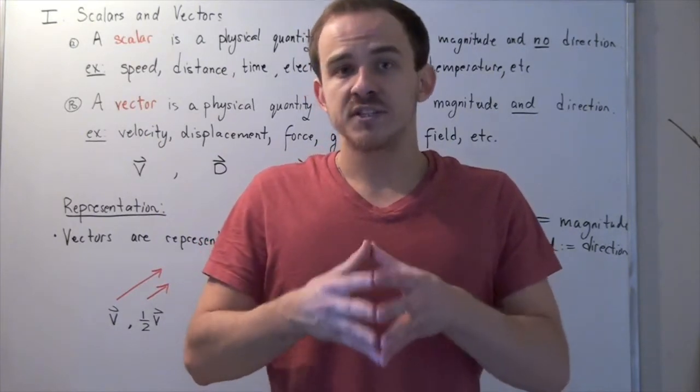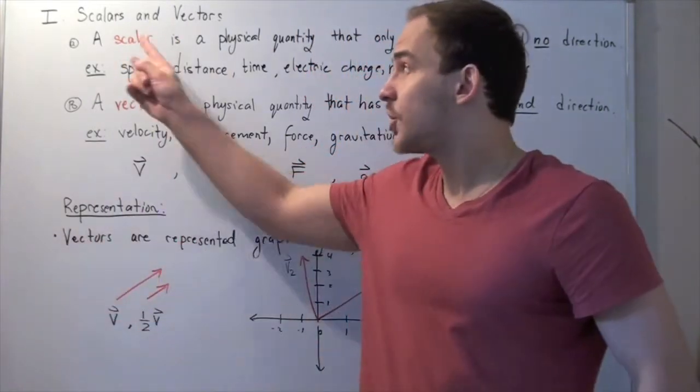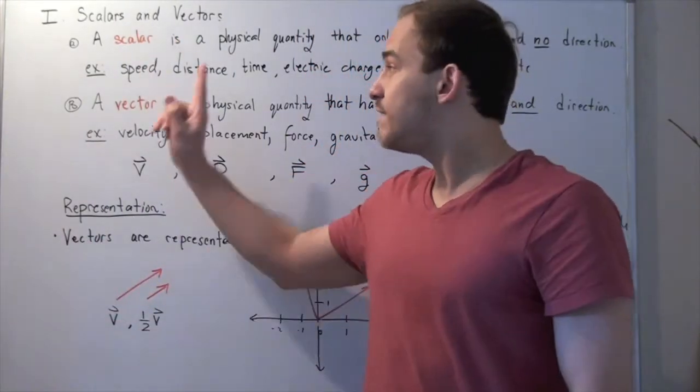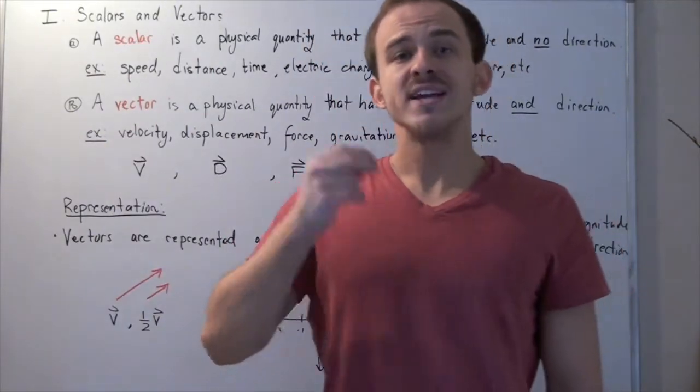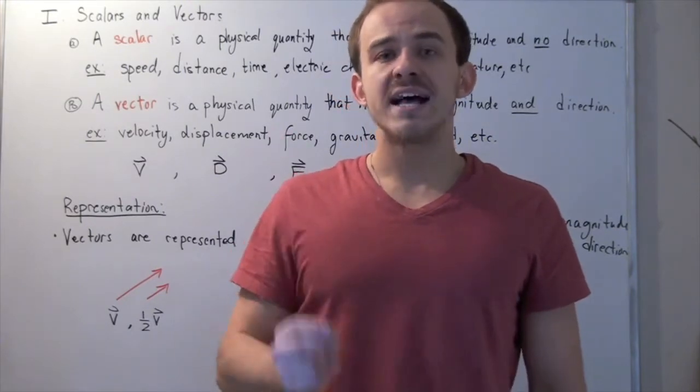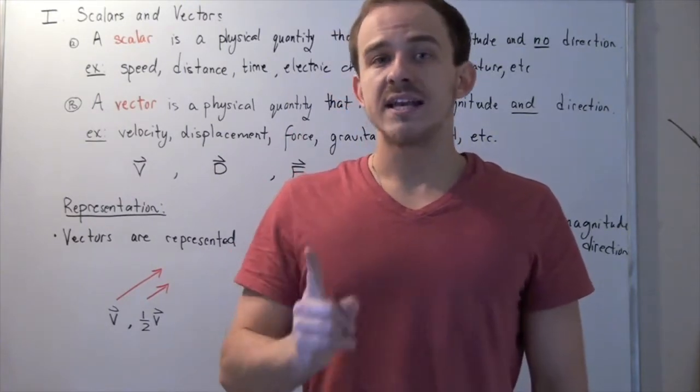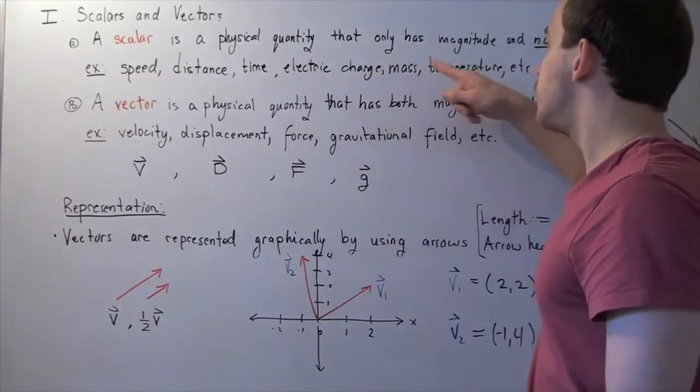And all these physical quantities can be categorized into two different categories: scalar physical quantities and vector physical quantities. So let's begin with scalar. Now a scalar is simply a physical quantity that only has a magnitude and it does not have a direction. In other words,